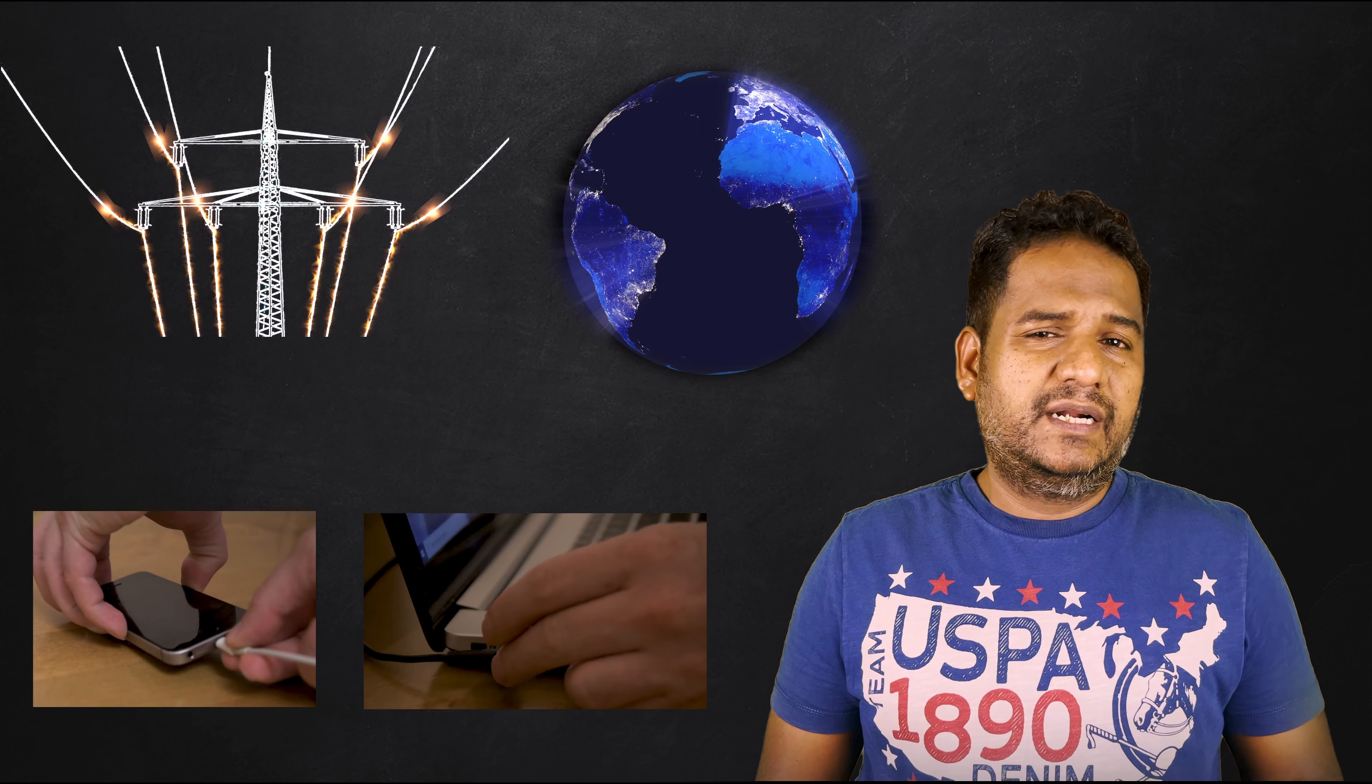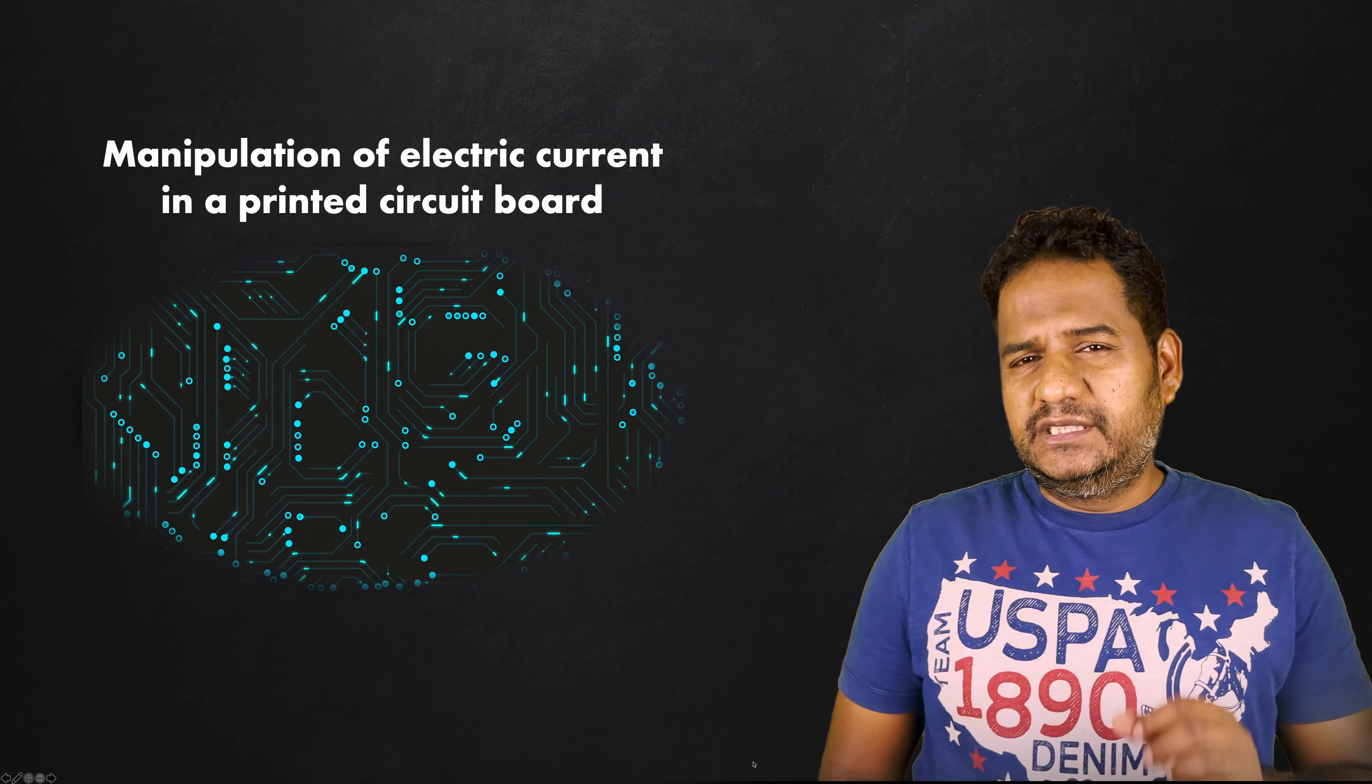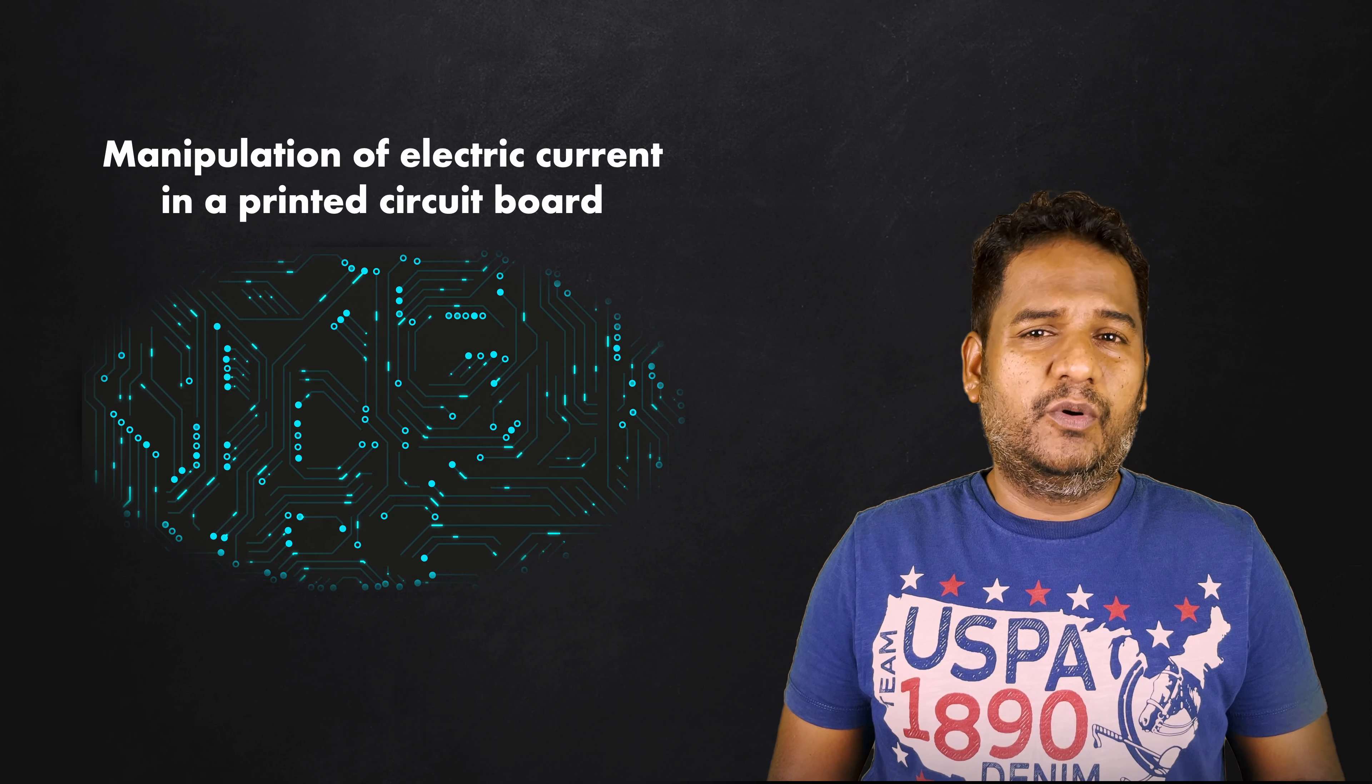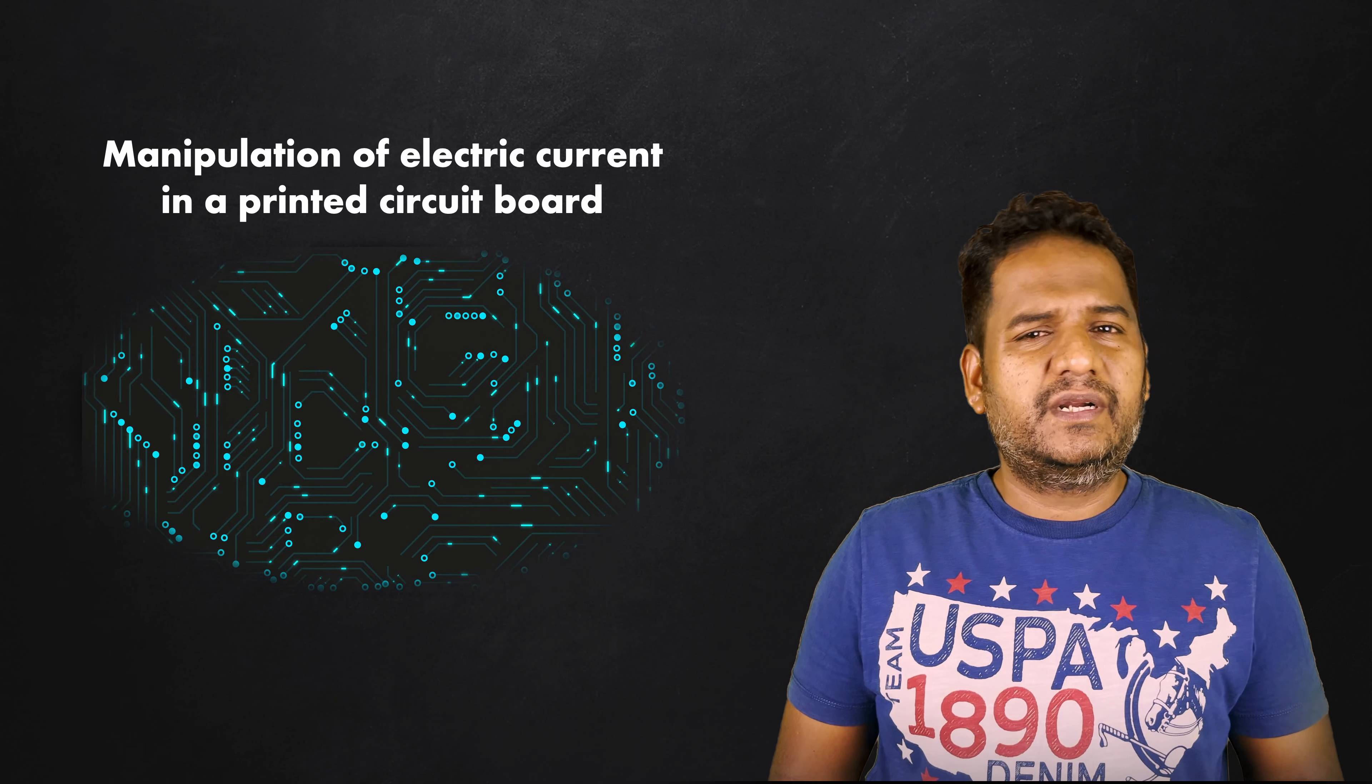So, electricity is all around us. It powers laptops, mobile phones, tablets, and any smart devices. Digital logic is nothing but a manipulation or control of electric current through a printed circuit board that uses transistors to implement computer operations.